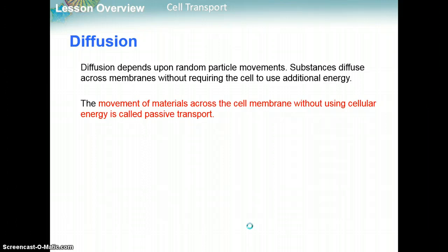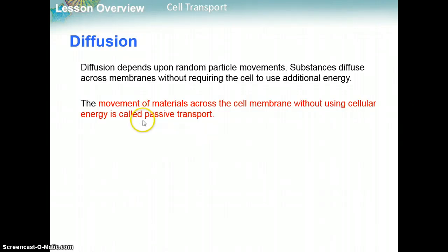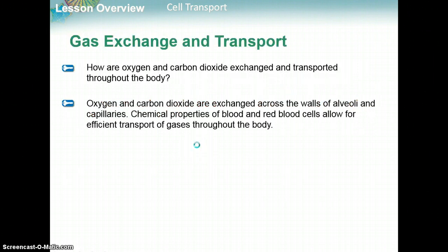Diffusion depends on random particle movements. Substances diffuse across membranes without requiring the cell to use additional energy — the movement of materials across the cell membrane without using any sort of energy is called passive transport. Diffusion happens passively, on its own. An example of this, tying back to the circulatory system, is how oxygen and carbon dioxide are exchanged from your circulatory system to the alveoli.